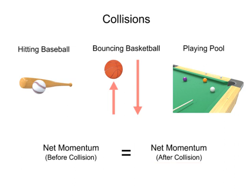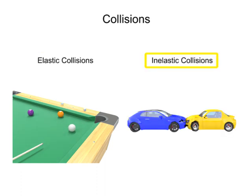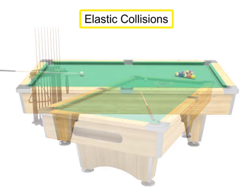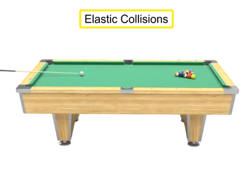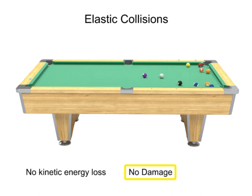There are two types of collisions: elastic collisions and inelastic collisions. An elastic collision is defined as one in which no kinetic energy is lost, no damage is done to the objects involved, and there is no generation of heat.